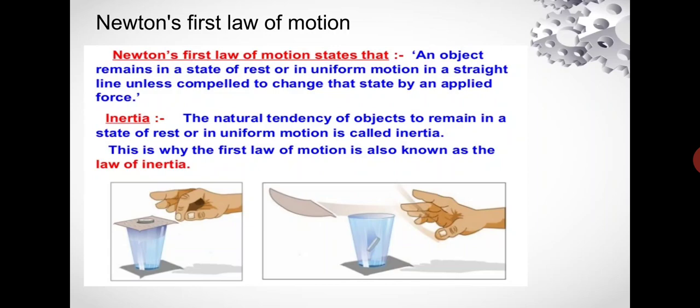What is inertia? The natural tendency of objects to remain in a state of rest or in uniform motion is called inertia.